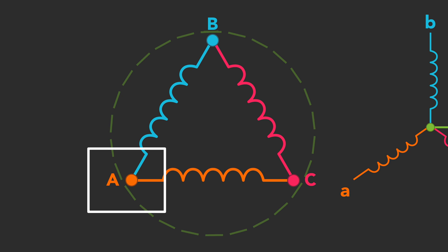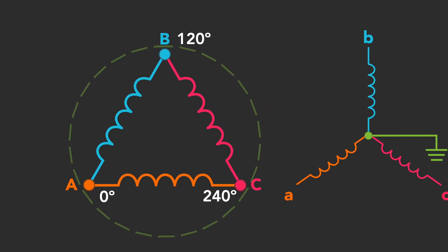We'll designate point A as zero degrees. Point B is located 120 degrees from point A. Point C is located at 240 degrees, which is 120 degrees from both points A and B. For comparison purposes, we'll plot reference lines inside the delta one-line diagram that correspond to the illustrated Y one-line diagram.